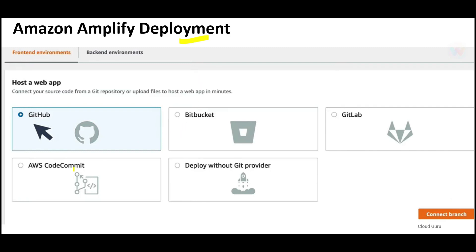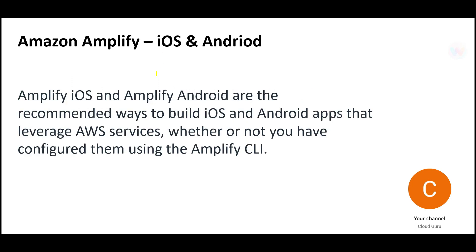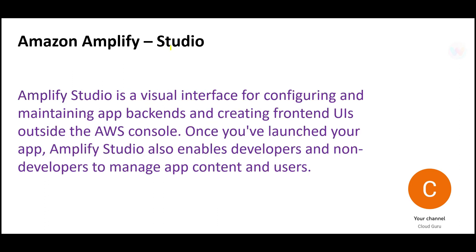For deployment, you can use GitHub or AWS CodeCommit to do front-end and back-end deployments, or host a web app. Amplify supports iOS, Android, web, and Flutter. For web apps there is deep integration with React and Angular. Amplify iOS and Amplify Android are the two widely recommended ways to build mobile applications, and they can leverage AWS services.